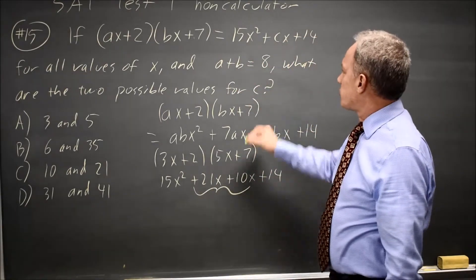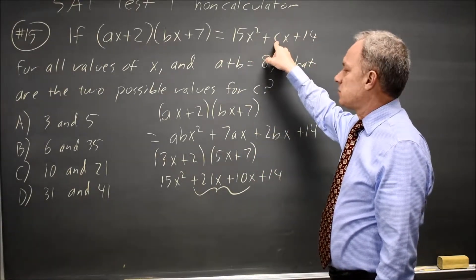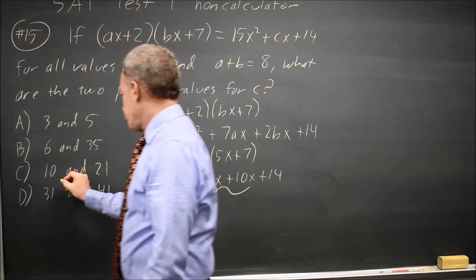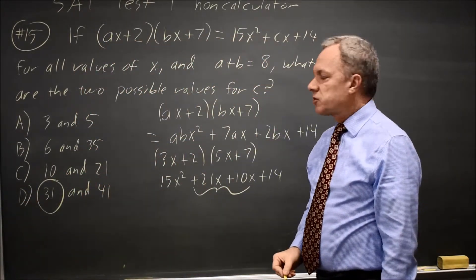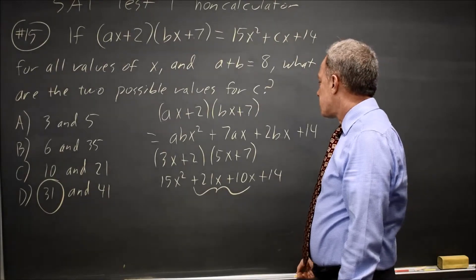And this simplifies to 31X. The X coefficient simplified would be 31, and that is C, which is what they're asking for. D is the only answer choice that has a 31, so that must be correct.